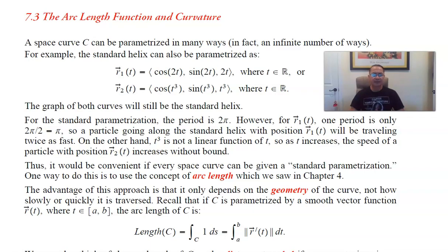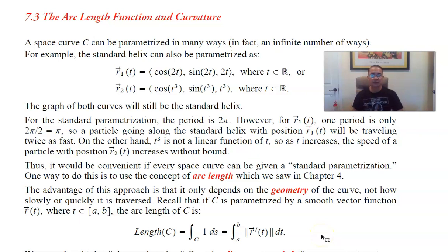Here we are. I hope you remember back in chapter four when we constructed contour integrals. We can use the contour integral in the most basic way to find the arc length of a curve. You take the derivative r prime, find its magnitude, and then integrate it on the domain of our curve. The domain had to be a closed and bounded interval — zero to one, two to five, whatever. Today we are going to build on this idea and create what's called the arc length function.